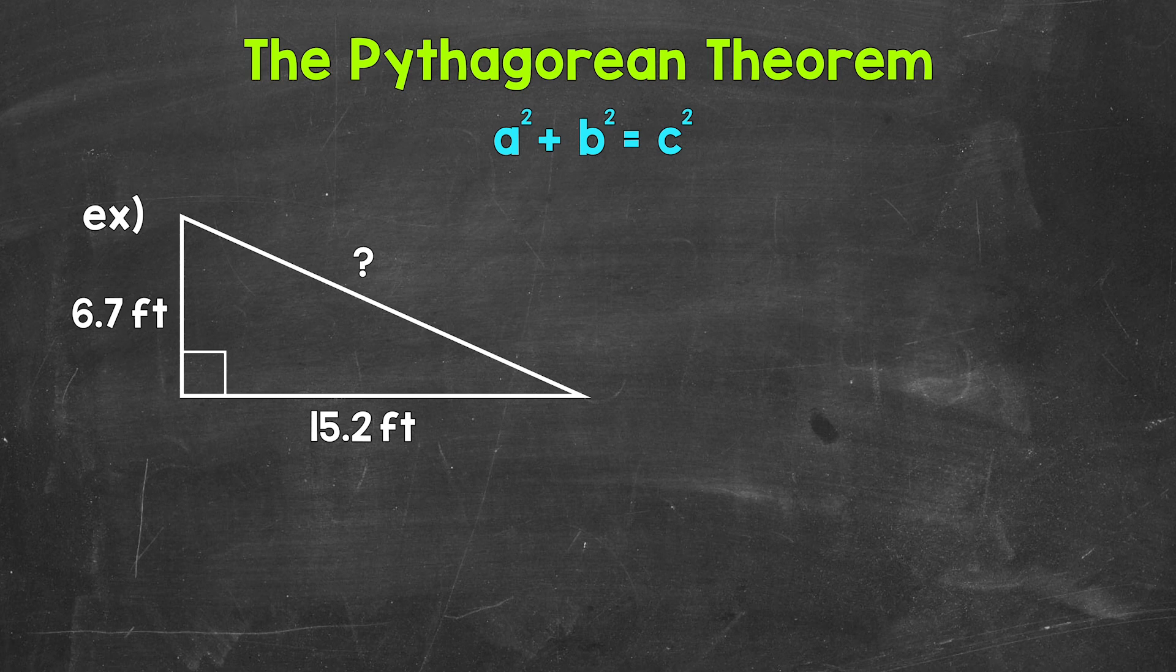Now remember, we use the equation a squared plus b squared equals c squared, with a and b being the legs. It doesn't matter which leg is a and which leg is b, and then c is always the hypotenuse.